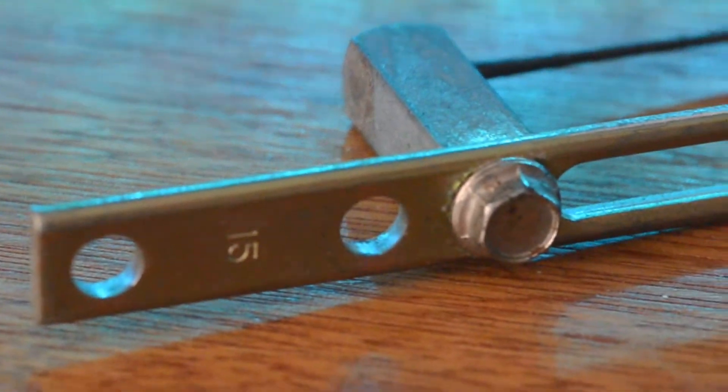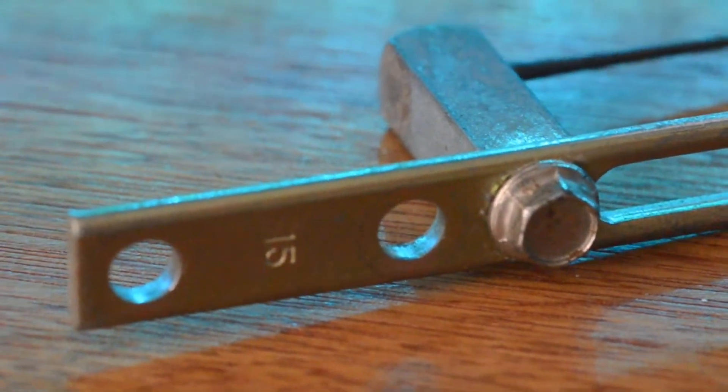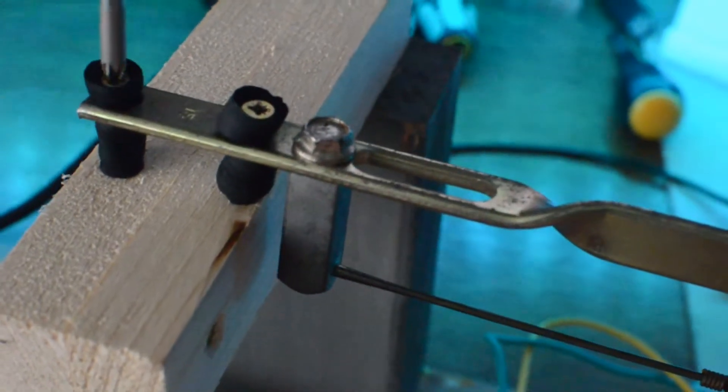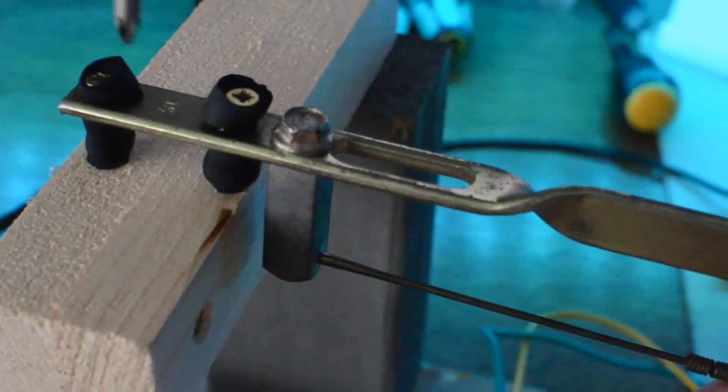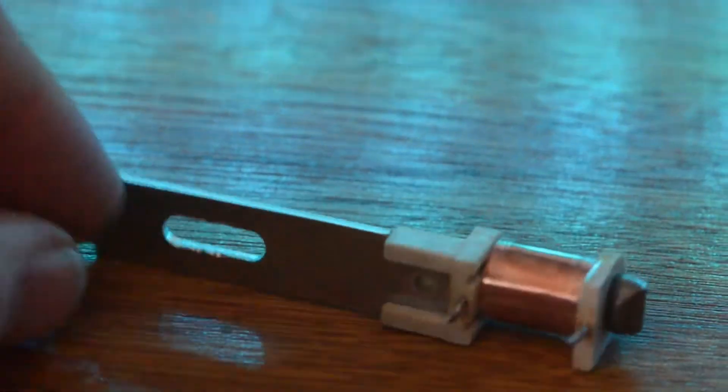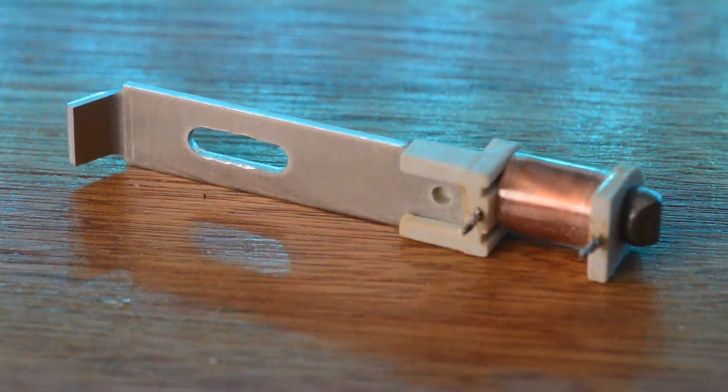The function of the tone bar is to help keep the tine oscillating in one plane and also to give sustain to the note. We're also going to use an electric pickup from a Fender Rhodes. This is used to generate the electrical signal that can then be amplified.